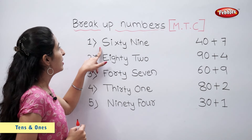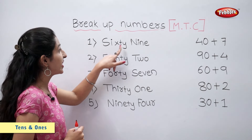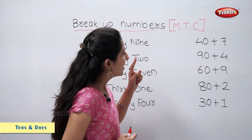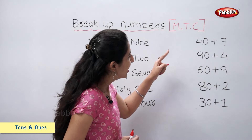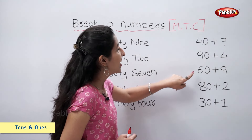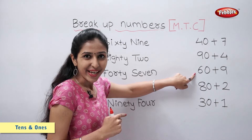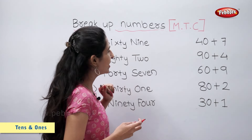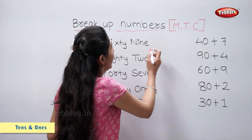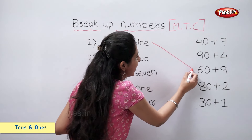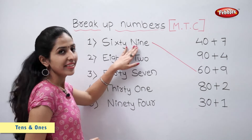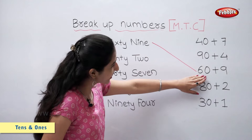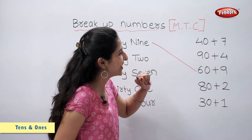First we have 69. 69 is 60 plus 9. Now let's match them. 69 is equal to 60 plus 9.